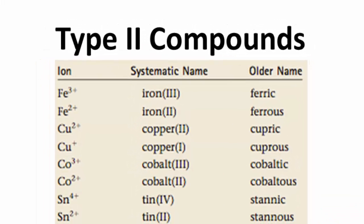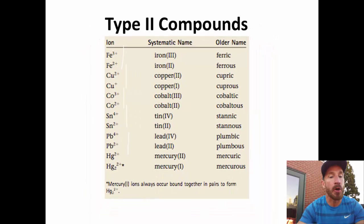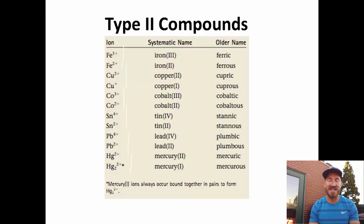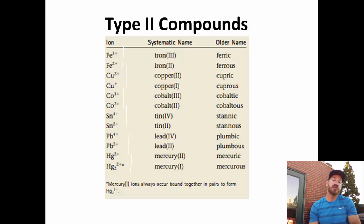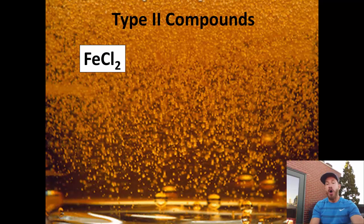Type 2 compounds are metals that have more than one possible charge. With these metals we need a Roman numeral to show which charge we're talking about. We have iron(II) and iron(III), copper(I) and copper(II), cobalt(II) and cobalt(III), tin(II) and tin(IV), lead(II) and lead(IV), and mercury(I) and mercury(II). Mercury is a little different — mercury(II) is a single atom with a plus 2 charge, but mercury(I) is actually a polyatomic ion: two mercury atoms bonded together with a combined plus 2 charge. We call it mercury(I) to distinguish it from mercury(II), and because each atom individually can be considered plus 1.